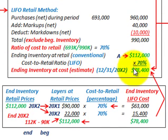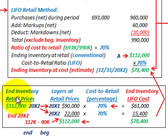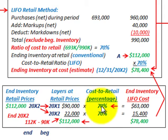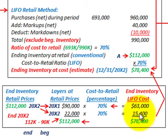Before making the adjustment, let's confirm the $78,400 by working through the LIFO layers. Our ending inventory at retail of $112,000 consists of two layers: the 20X1 layer of $90,000 and the 20X2 layer of $22,000. Applying the 70% cost-to-retail ratio to each layer gives $63,000 for the 20X1 layer and $15,400 for the 20X2 layer, totaling $78,400 — confirming our earlier calculation.